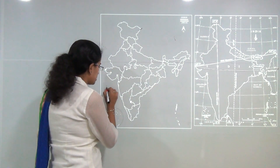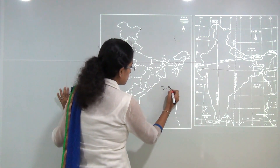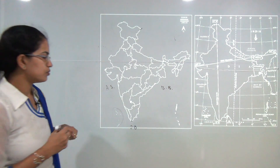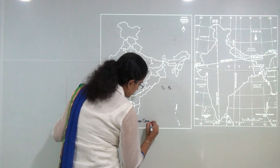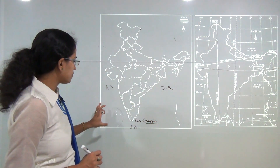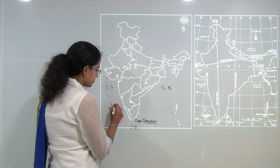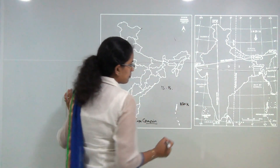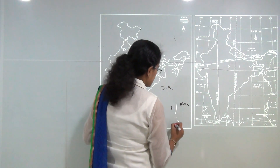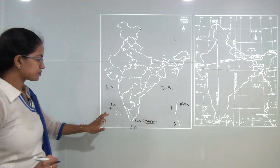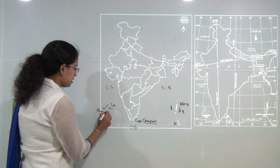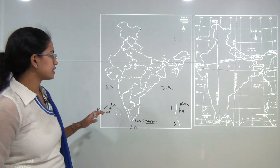India is bordered by three water bodies: the Arabian Sea, the Bay of Bengal, and the Indian Ocean. The point where these three meet is known as Kanyakumari, formerly called Cape Comorin. The Lakshadweep island group lies in the Arabian Sea, while the Andaman and Nicobar island group lies in the Bay of Bengal — the Andaman islands are in the north and the Nicobars in the south. The capital of Andaman and Nicobar is Port Blair, and the capital of Lakshadweep is Kavaratti. Both are union territories.